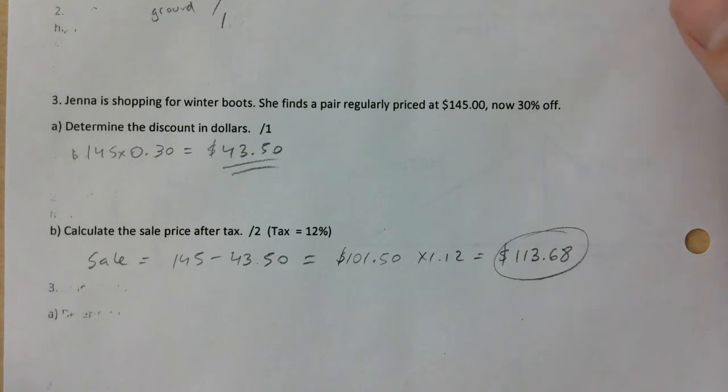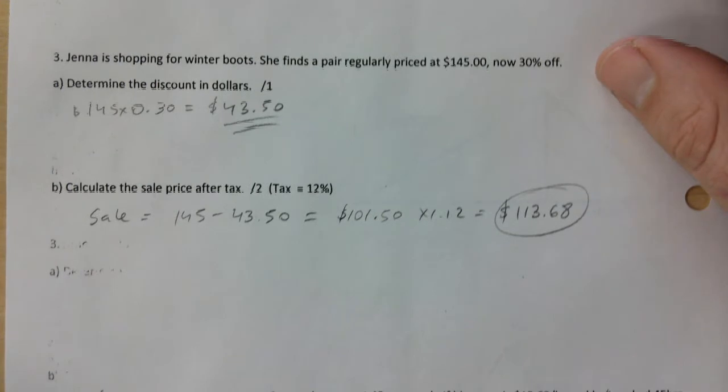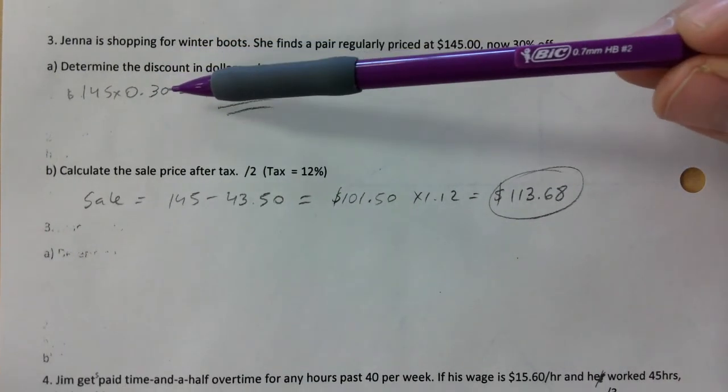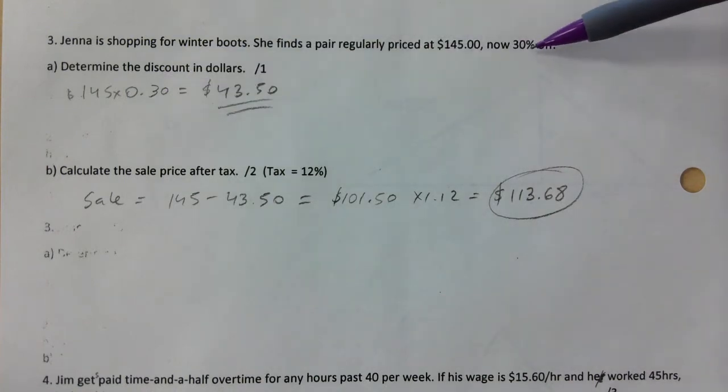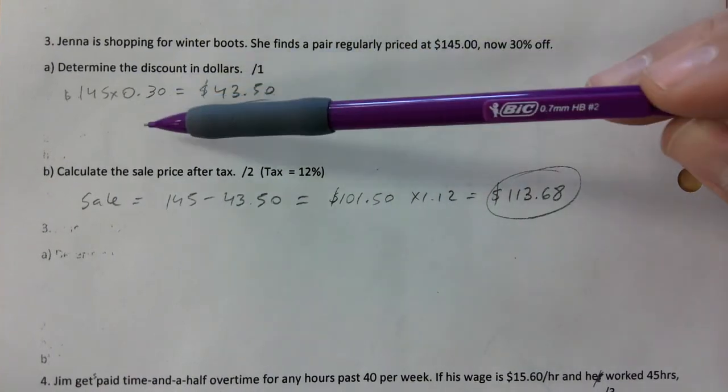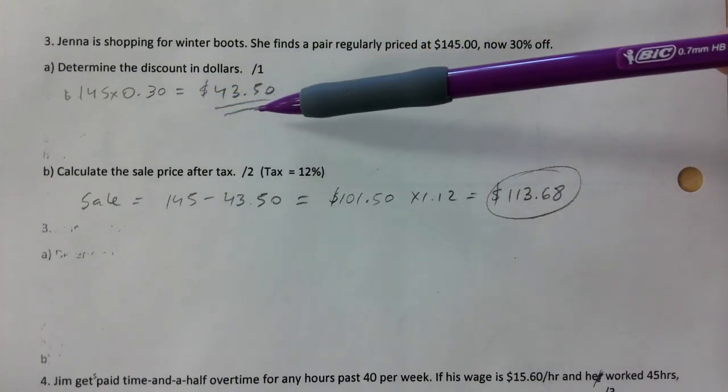All right, so we're doing a little bit of stuff we've done in the past, finding the discount in dollars. You need to obviously convert that to a decimal, divided by 100 essentially, and so you get $43.50. Half for the work, half for the final correct answer.